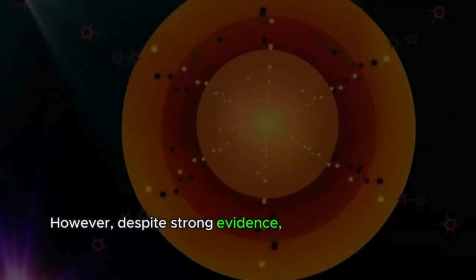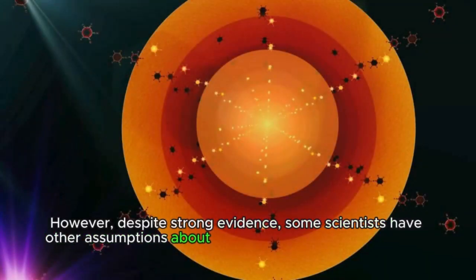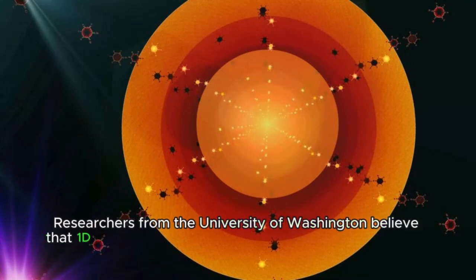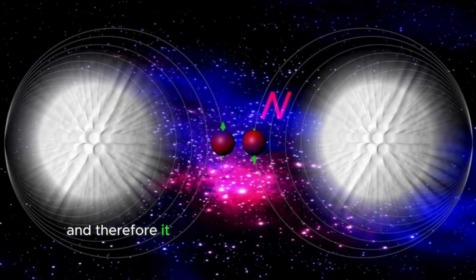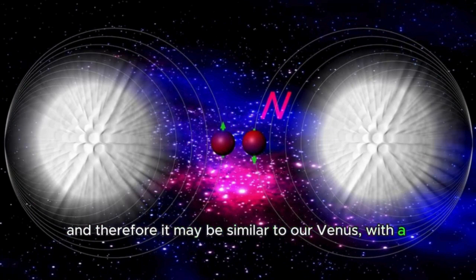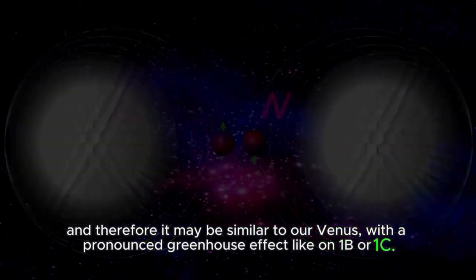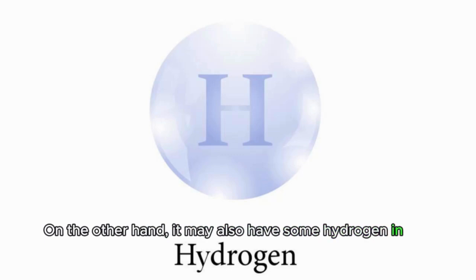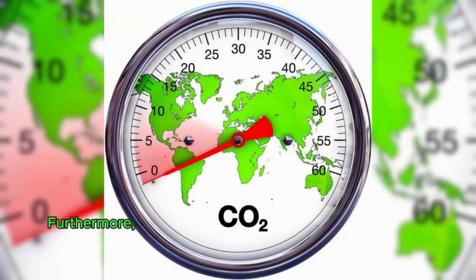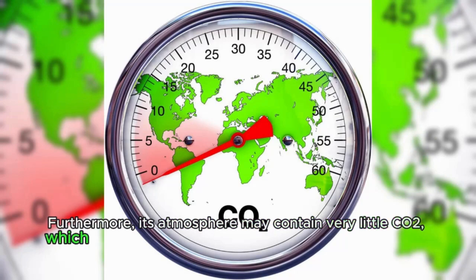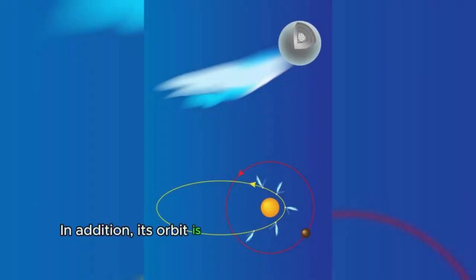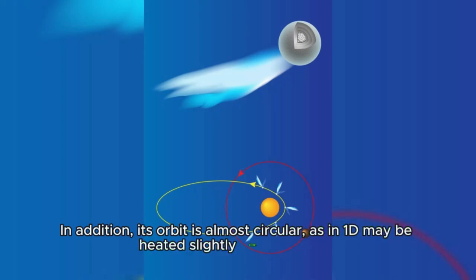However, despite strong evidence, some scientists have other assumptions about the possibility of life on TRAPPIST-1d. Researchers from the University of Washington believe that 1d receives more energy from the star than the more distant planets. And therefore, it may be similar to our Venus, with a pronounced greenhouse effect like on 1b or 1c. Therefore, life is unlikely to develop there. On the other hand, it may also have some hydrogen in the atmosphere, which would prevent it from overheating. Furthermore, its atmosphere may contain very little CO2, which would have a negative effect on the emergence of life. In addition, its orbit is almost circular, so 1d may be heated slightly due to gravity.